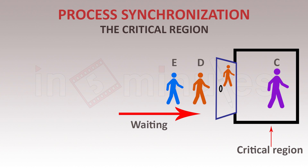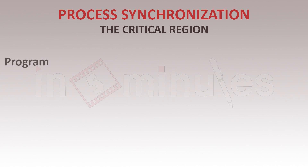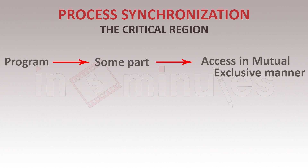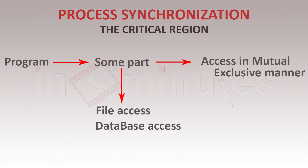The basic idea is that the critical region is a specialized region which can be accessed in a one-at-a-time manner — this is known as mutual exclusion. Practically speaking, every program will have some part that needs to be accessed in a mutually exclusive manner. This part may refer to file access, database access, or variable access.